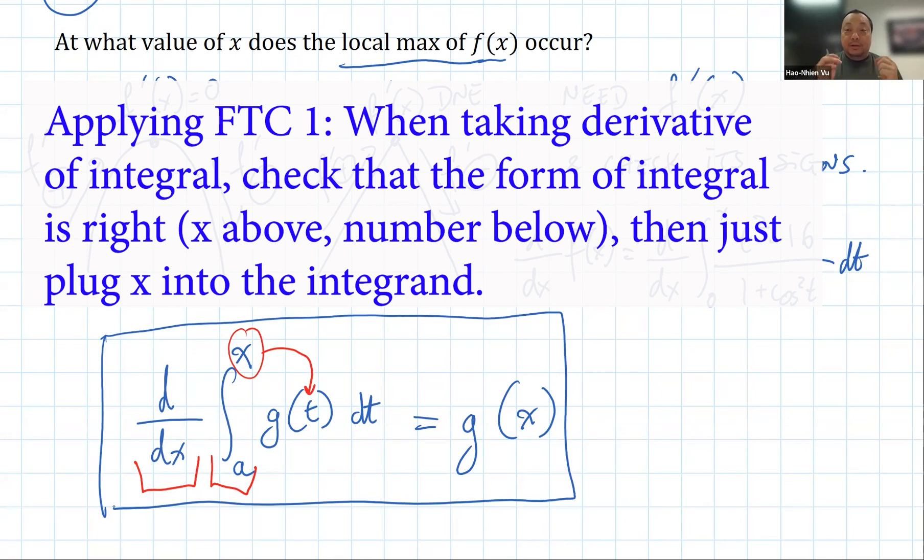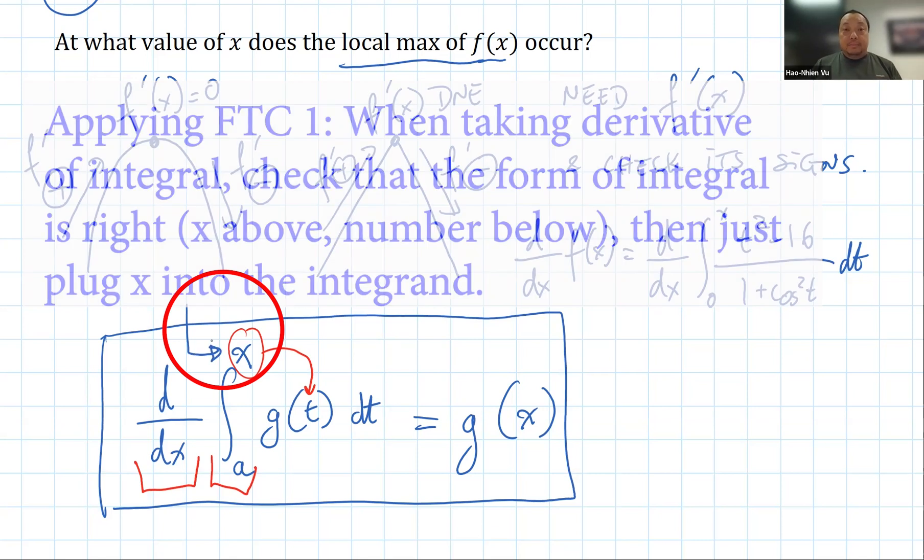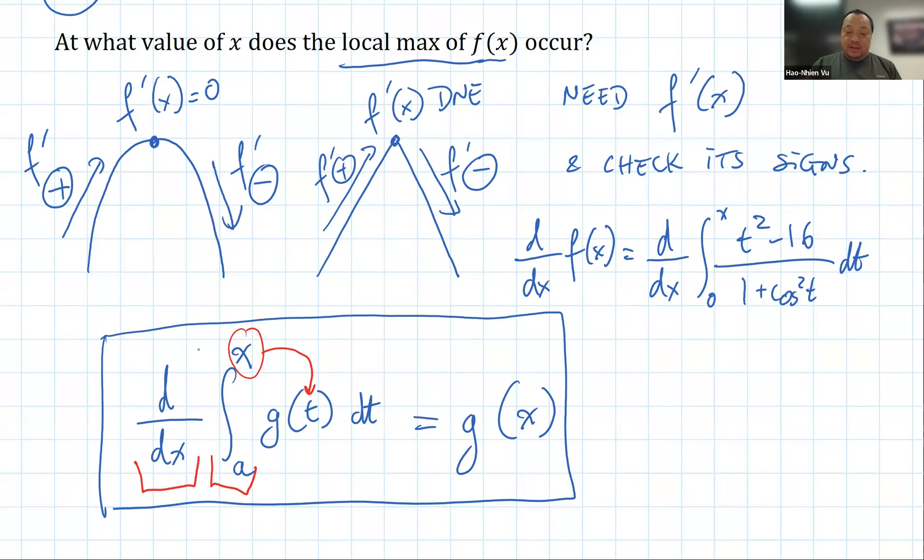So that's the Fundamental Theorem of Calculus. It says when you have derivative and integral, they cancel. And then you have to be careful about little details. First detail is that the function g has to be continuous. Second detail is that that variable x must be up there. When the x is at the bottom, for example, something like this, then you need to flip it around by taking the negative of it so that it flips to the top. And then you can plug it in. But then you end up with an extra negative symbol in front.